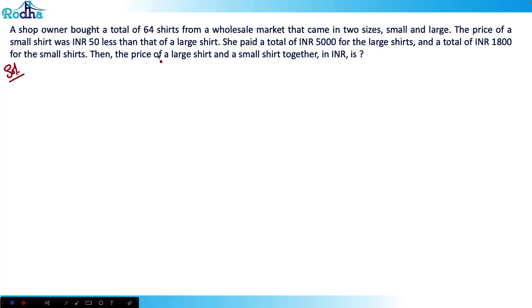Hi everyone, let's solve this next question from CAT 2021 Slot 3. It's a very good question because it consists of equations and will take time to solve. Let's see what innovations we can do and what new things we can learn. A shop owner bought a total of 64 shirts from a wholesale market that came in two sizes: small and large.